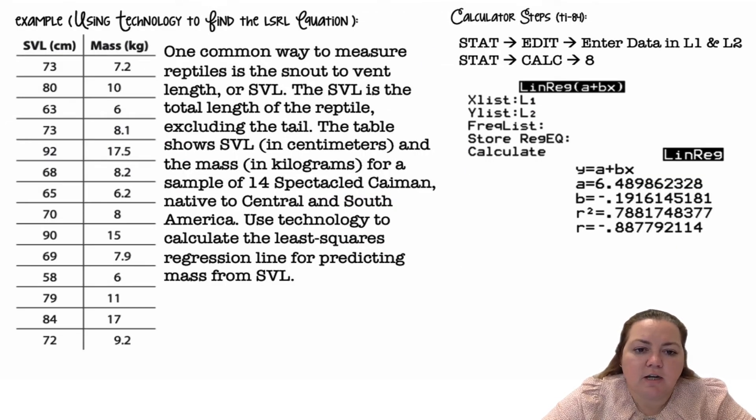All right, so we are going to use technology to find the least squares regression line. One common way to measure reptiles is the snout to vent length, or SVL. The SVL is the total length of the reptile, excluding the tail. The table shows SVL in centimeters and mass in kilograms for a sample of 14 speckled caiman native to Central and South America. Use technology to calculate the least squares regression line for predicting the mass from SVL.